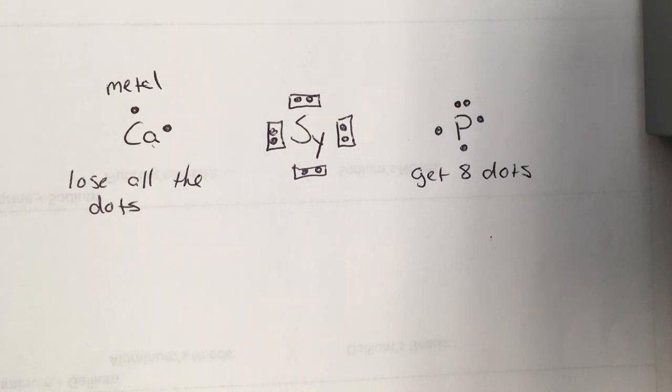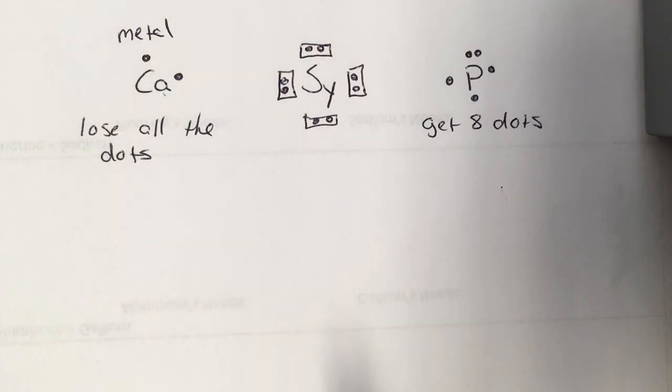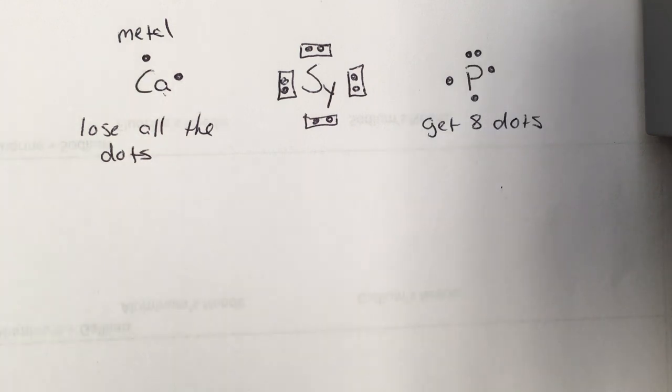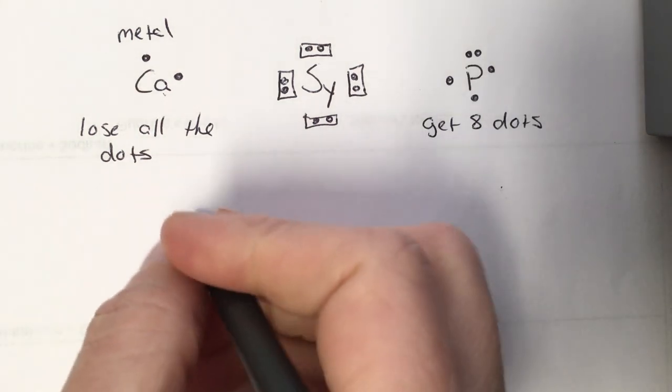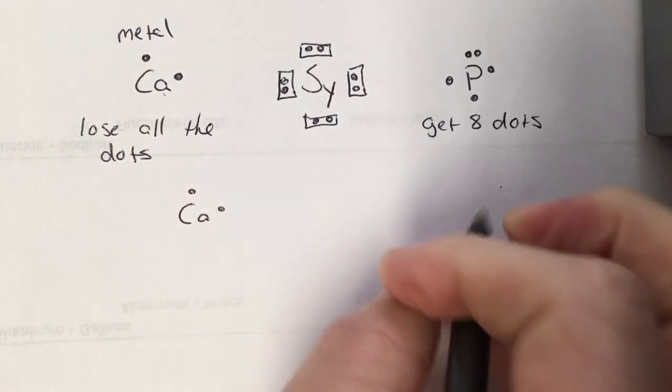The way we're going to use this Lewis structure, these Lewis dot diagrams, to illustrate bonding is by showing the transfer of electrons, by drawing these atoms in and putting arrows in to show how the electrons move from one place to the other. And the rule is, we just draw them out until all of our metal atoms have lost all the dots they need to lose, and all of our non-metals have all eight dots that they need to have. So generally speaking, we just start out with one of each and see what happens.